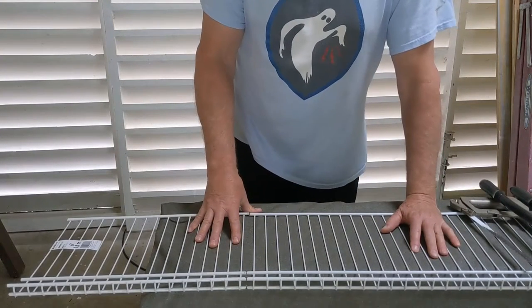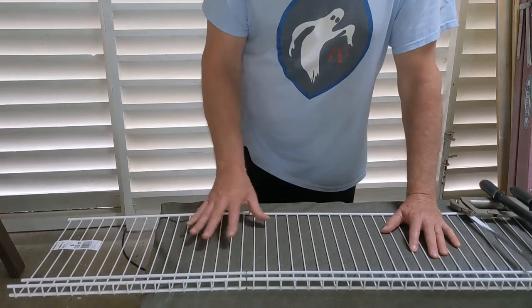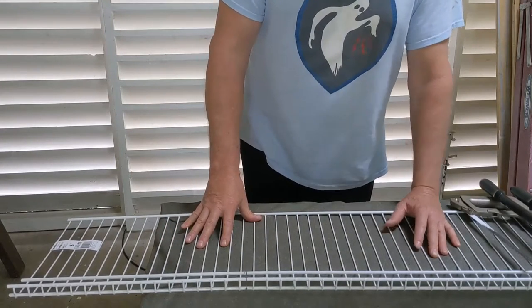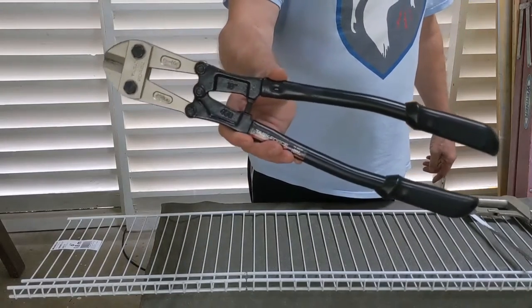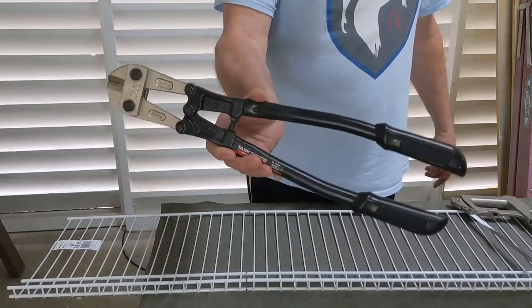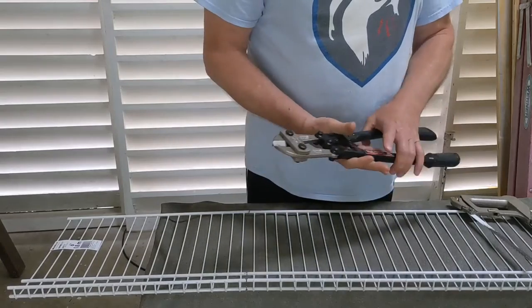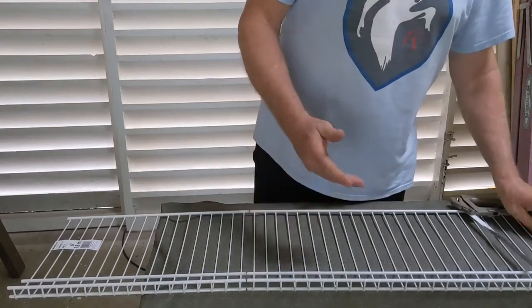I'm installing some closet made wire mesh shelving, and this is a really quick and easy way to cut it if you happen to have bolt cutters. But if you don't have bolt cutters, a hacksaw works perfectly well.